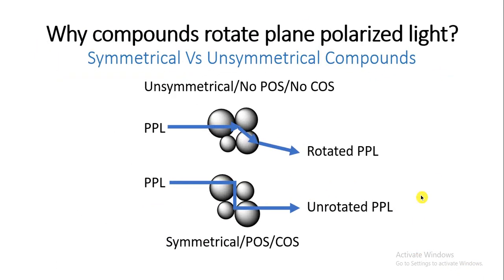Why do compounds rotate plane polarized light? It is due to the symmetry of molecules. If a compound is unsymmetrical — having no plane of symmetry or center of symmetry — it will rotate plane polarized light. If a compound is symmetrical, having a plane of symmetry and center of symmetry, it will not rotate plane polarized light.